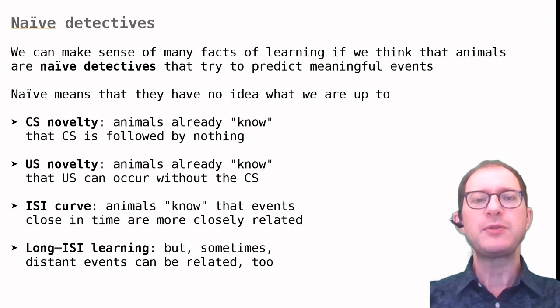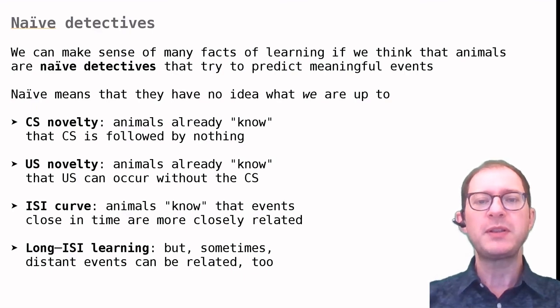ISI effects can also be explained similarly. Let's start with the eyeblink. We saw that here the effective ISI is fairly short, between a quarter of a second and a few seconds. This makes sense if we think about what is the natural function of the eyeblink, that is to protect the eye. In nature, the most obvious case when a sound predicts a threat to the eye is the case of a buzzing insect.